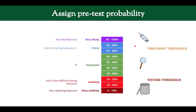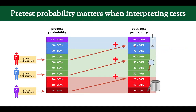Bayesian reasoning is the ability to apply a test to your pre-test probability and move your post-test probability up or down. This was a more intuitive picture — we'll look at it more numerically in the coming videos. If you have any questions, please put them in the comments. Thank you for watching.